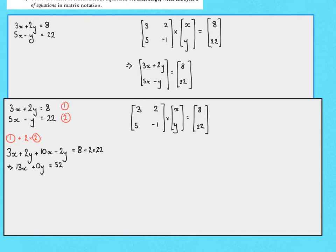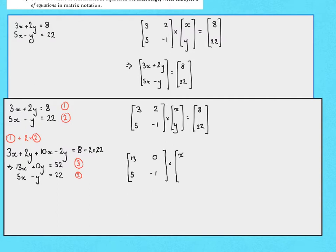We'll call that equation 3, and write equation 2 underneath: 5x - y = 22. In matrix notation, using the coefficients, we have [13, 0; 5, -1] times [x; y] = [52; 22]. All we've done is add two lots of the second row onto the first row — and the relationship still holds provided we do the same to both the left and right-hand side matrices.